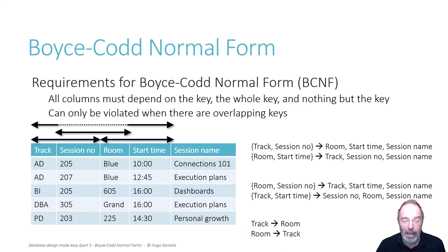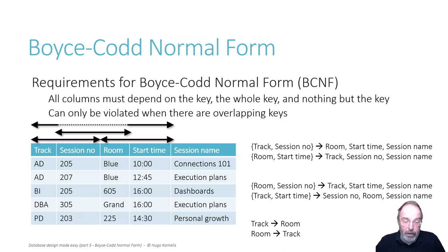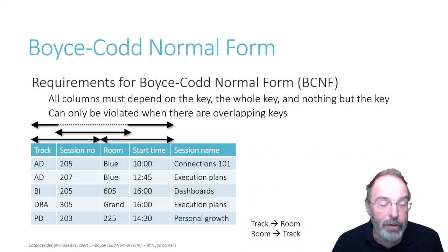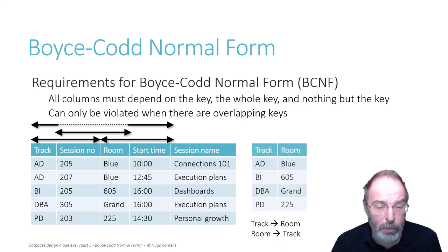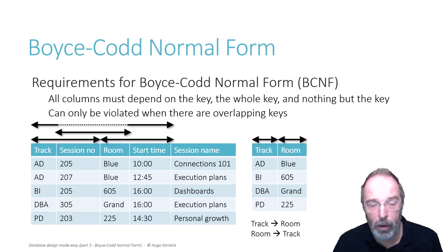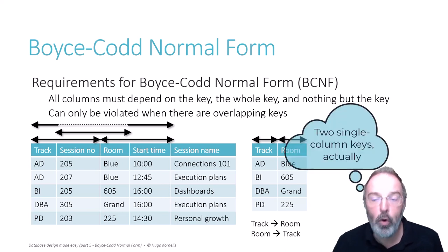Let's fix that then. Let's go back to the original data and look at how to fix this. If you watched the previous videos, you will know that if there are functional dependencies that violate a normal form, you typically look at those functional dependencies and then create a new table with just the columns from those functional dependencies — track and room in this case. And then based on those functional dependencies, you can see that there are two key columns. They are not overlapping and all the normal forms covered so far are observed.